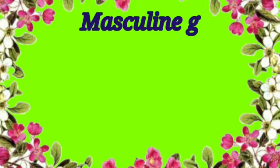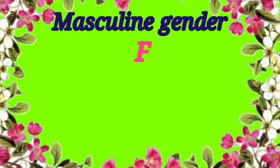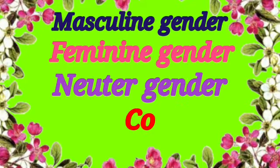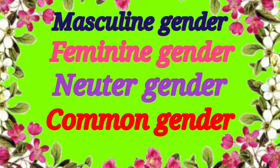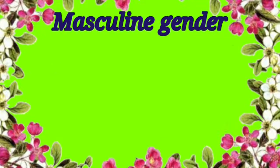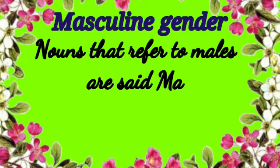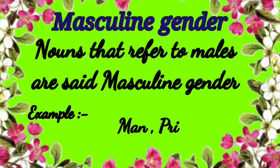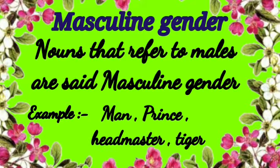Now let's talk about gender. There are four types of gender: masculine gender, feminine gender, neuter gender and common gender. Nouns that refer to males are said to be of the masculine gender. Examples: man, prince, headmaster, tiger, etc.